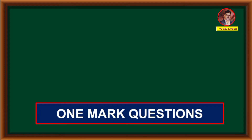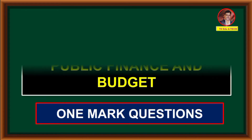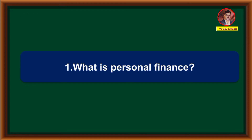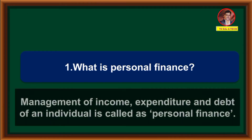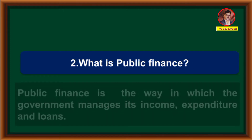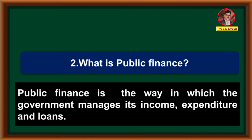10th standard Social Science, Economics Unit 4: Public Finance and Budget. Management of income, expenditure and debt of an individual is called personal finance. Public finance is the way in which the government manages its income, expenditure and loans.